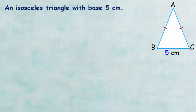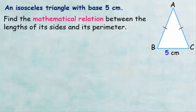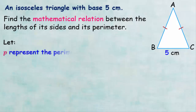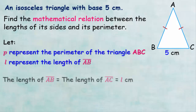In this example, we have an isosceles triangle ABC with a base length of five centimeters. We want to find a mathematical relation between the length of its sides and its perimeter. We assume that the symbol B represents the perimeter of triangle ABC and the symbol L represents the length of AB. Since the triangle is isosceles, the length of AB equals the length of AC equals L centimeters.